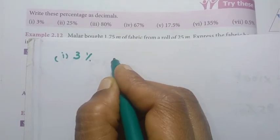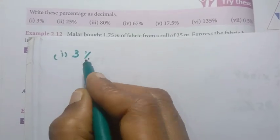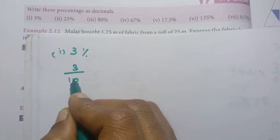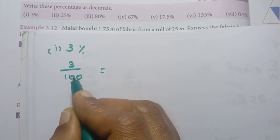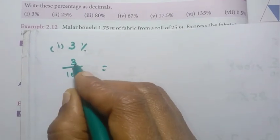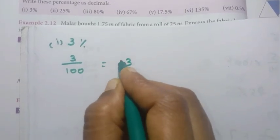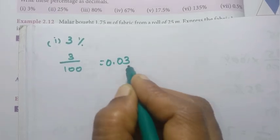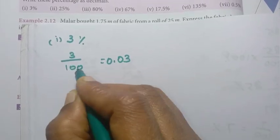This is decimal. Decimal is point. So what do you think? 3 by 100. Not 2 zeros — 3, 0, 0. 1, 2, 0.